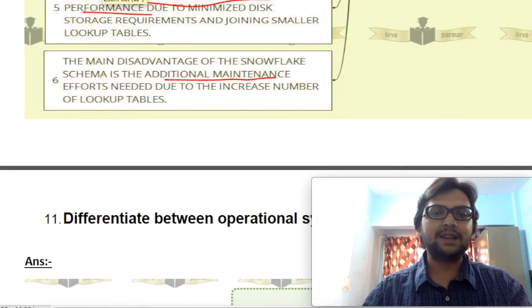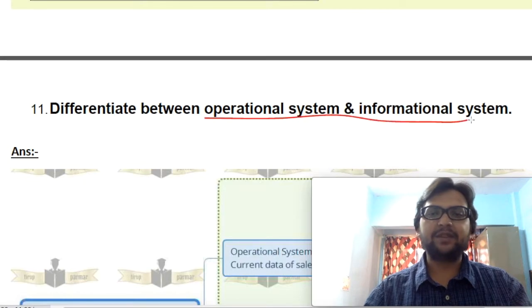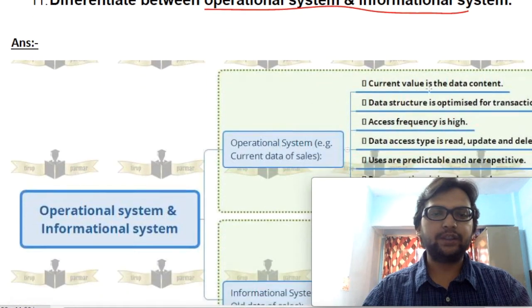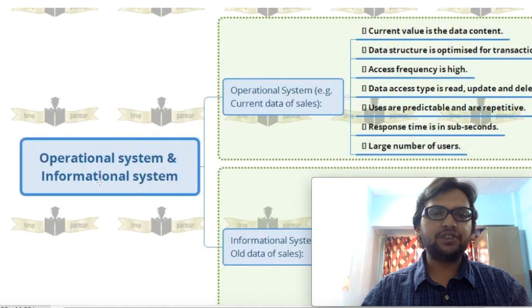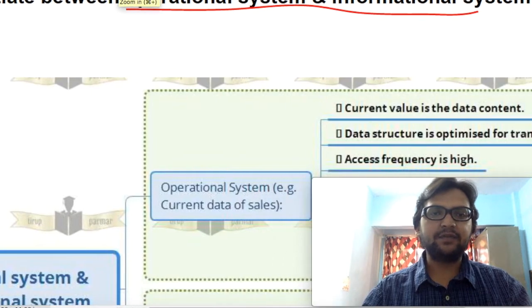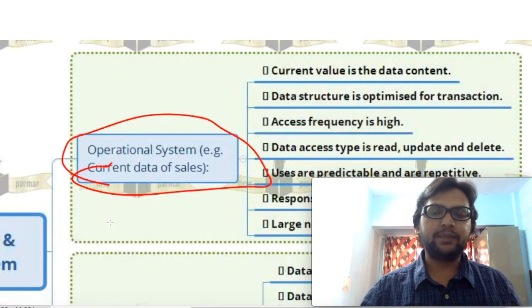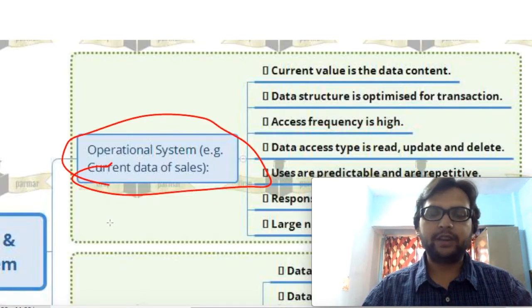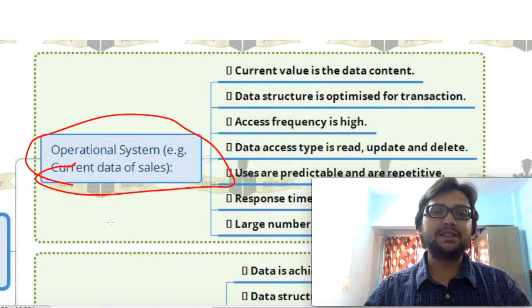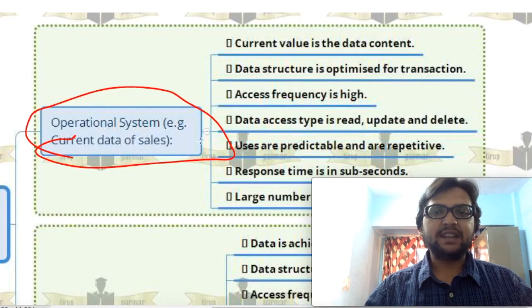Now we'll discuss the last question for unit one: differentiation between operational database system and informational database system, asked in the year 2014. An operational system deals with current data. For example, in a college database dealing with students — how many admissions, how many students admitted for FY BACIT, SY BACIT, or TY BACIT — that is our current data. So the data structure is optimized for transactions.